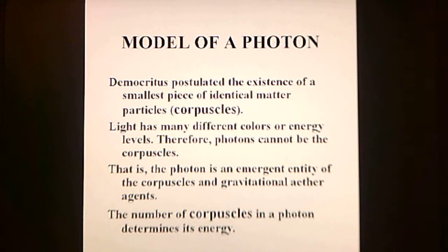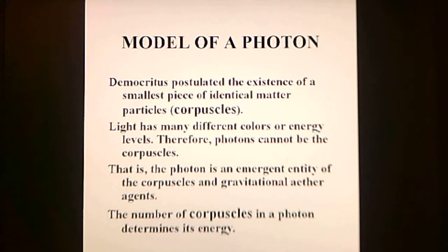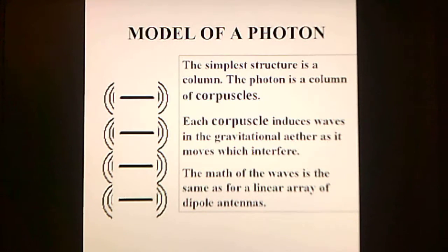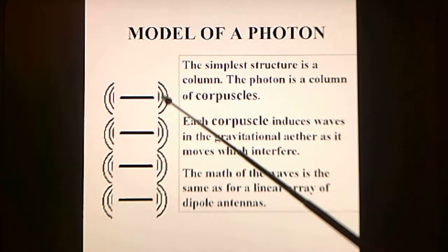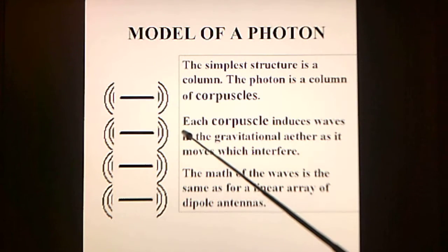Democritus postulated the existence of a smallest piece of identical matter particles — these are Newton's corpuscles. Light has many different colors, or energy levels. Therefore, photons cannot be the corpuscles. That is, the photon is an emergent entity of the corpuscles and gravitational ether agents. The number of corpuscles in a photon determines its energy. The simplest structure we can conceive of is a column of corpuscles, and each one of them introduces a wave into the ether.